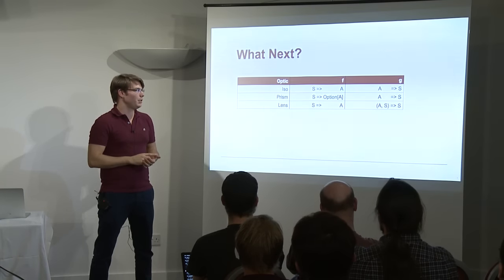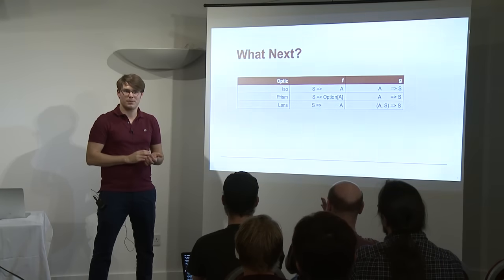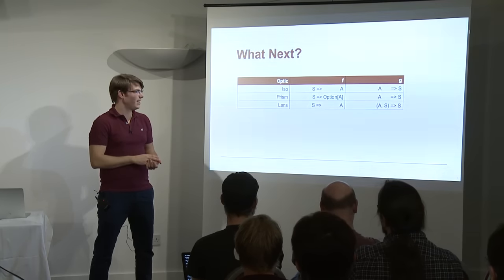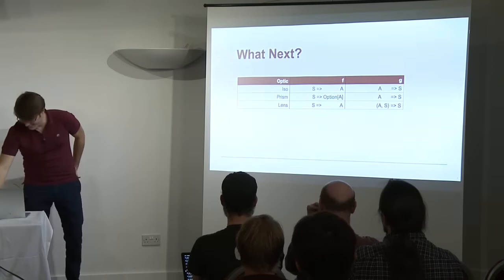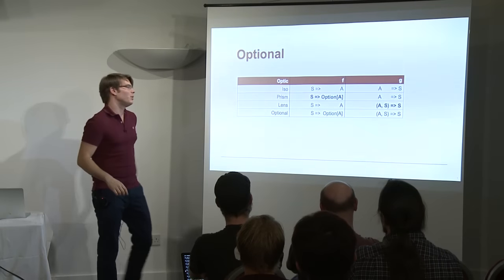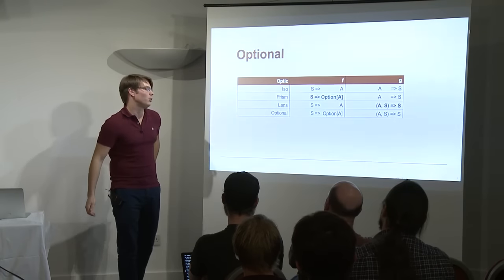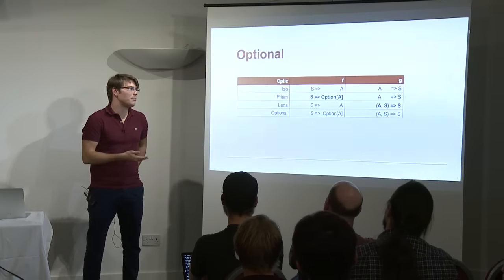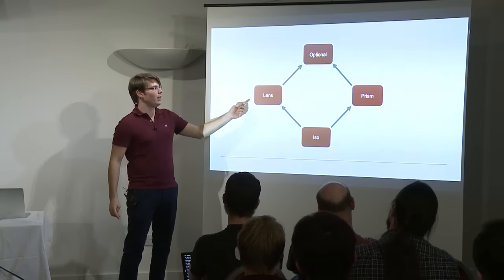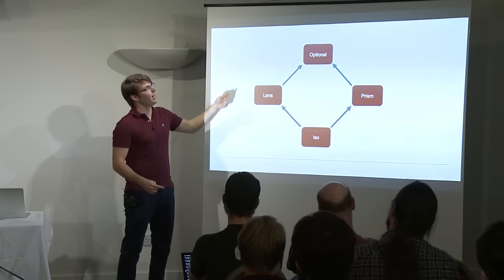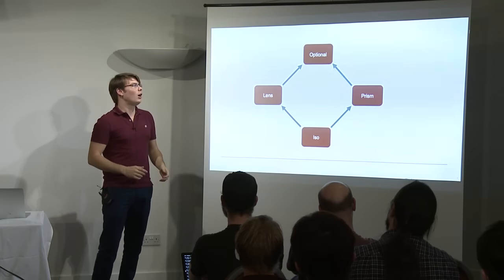One thousand dollar question: what's next? We have ISO, prism, and lenses. Prisms are weaker ISOs, lenses are weaker ISOs. Here's the canonical definition — do you have any idea what we could do next? You take the F from the prism row and the G from the lens row and make something out of that. Exactly! You take both the weaker functions from prism and lens and construct a new optic called Optional. By construction, all ISOs are lenses, all ISOs are prisms, all lenses are optional, and all prisms are optional — forming a diamond. By transitivity, all ISOs are also optional.